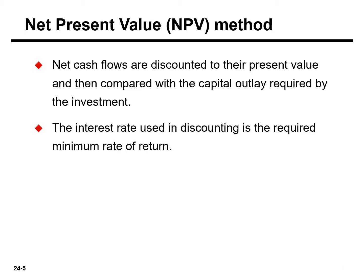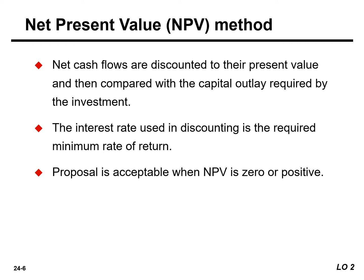Management determines what interest rate to use in discounting the future net cash flows. This rate is often referred to as the discount rate or the required rate of return. A proposal is acceptable when the net present value is zero or positive. At either of those values, the rate of return on the investment equals or exceeds the required rate of return — the rate management expects on investments, sometimes called the discount rate or the cost of capital.